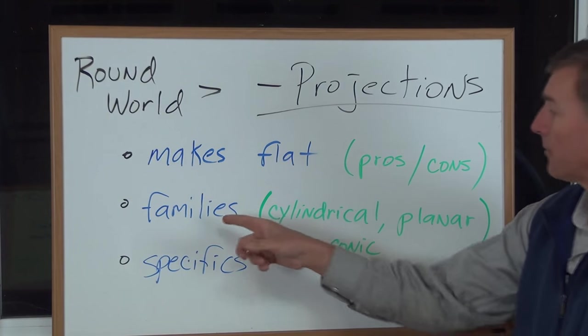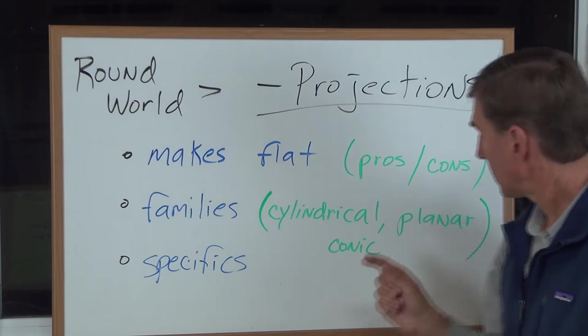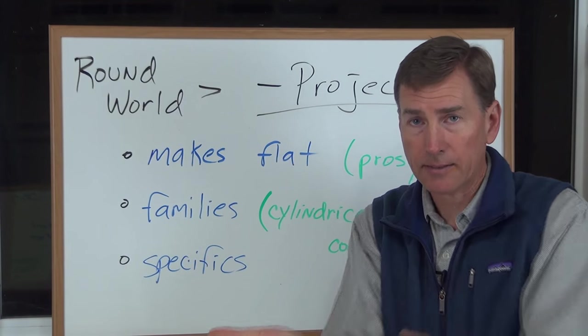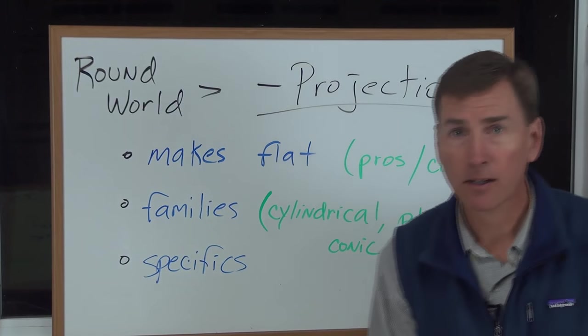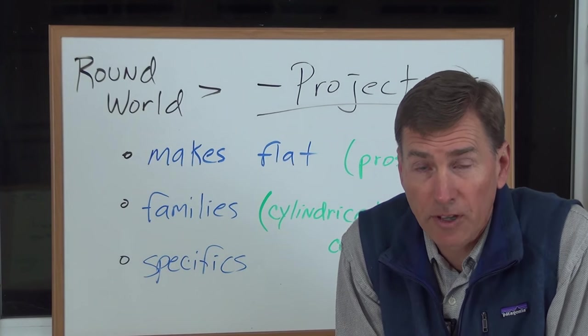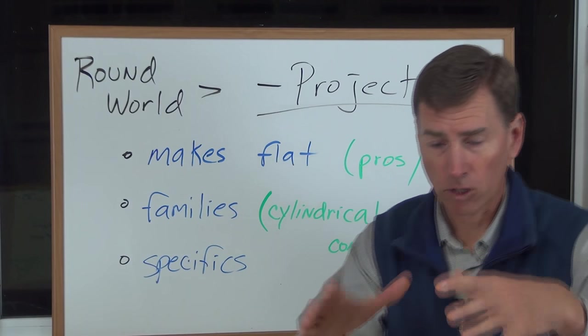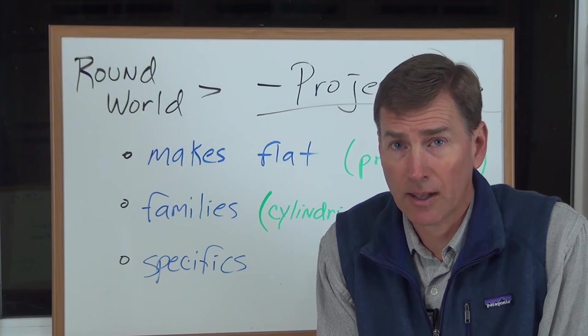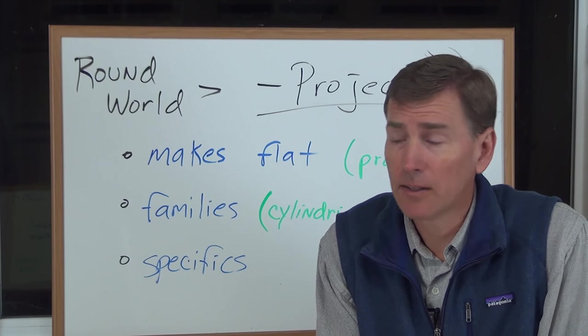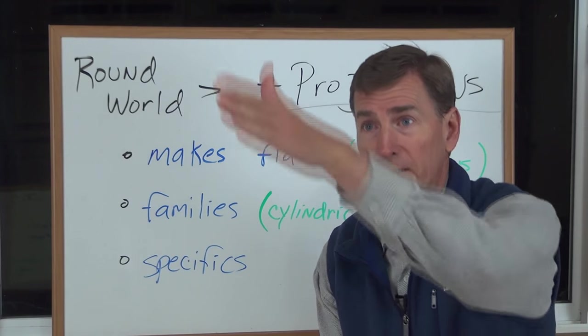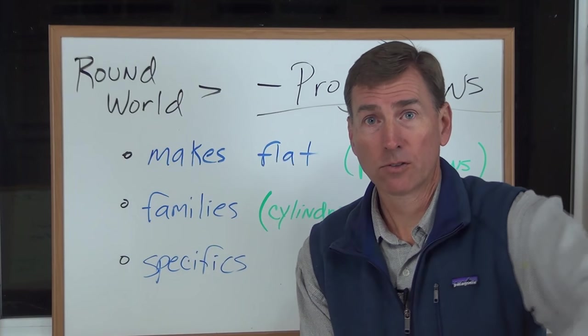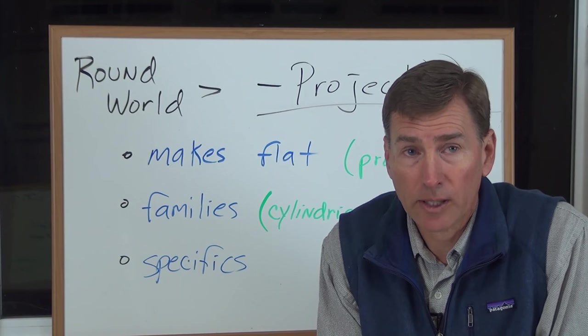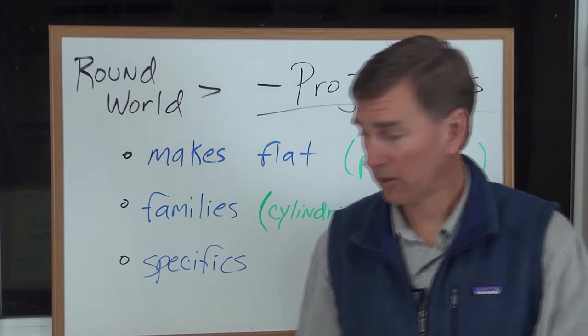There are other families, so cylindrical is a real common one. Planar, where you put a flat surface and project onto that. And also conic. Conic, you could drape a cone over the top of the globe and project onto that. The good thing about that is it maintains shapes and size. The bad thing about it is that it makes your lines of latitude swooped like that or curved. That was the map projection that we saw on both these maps.